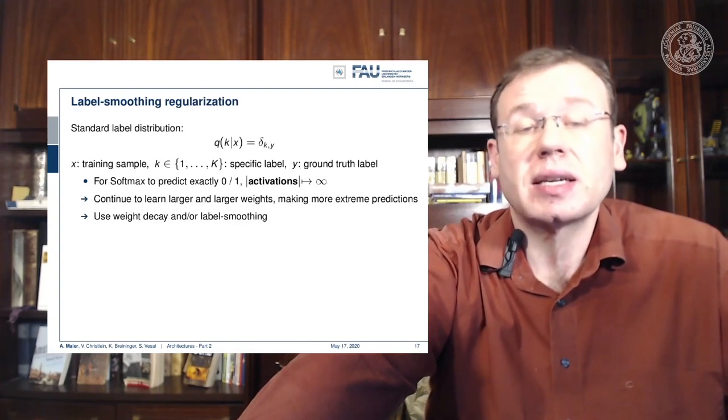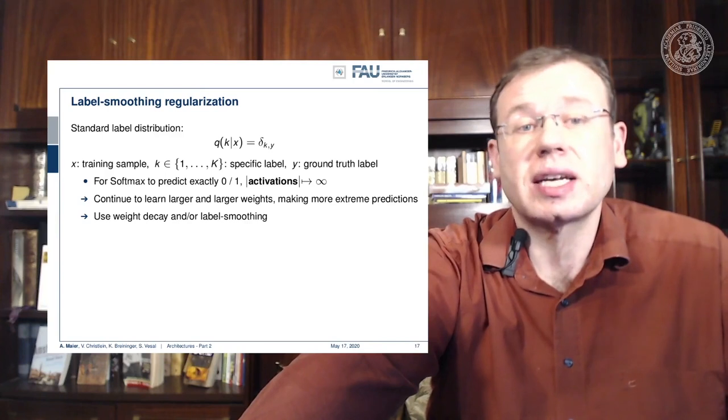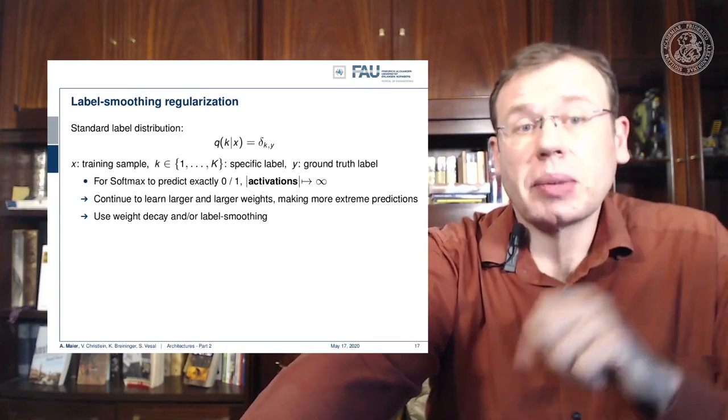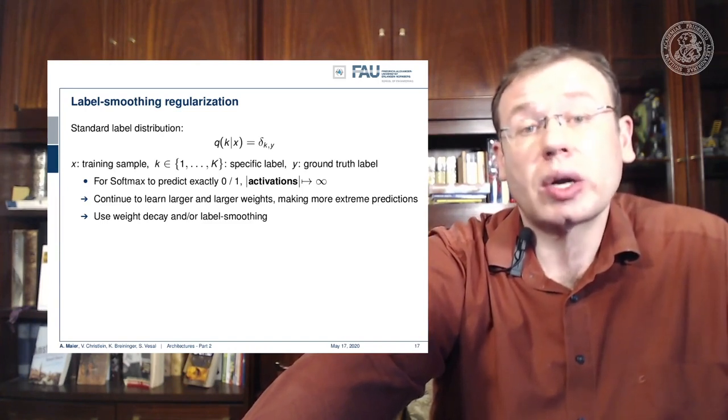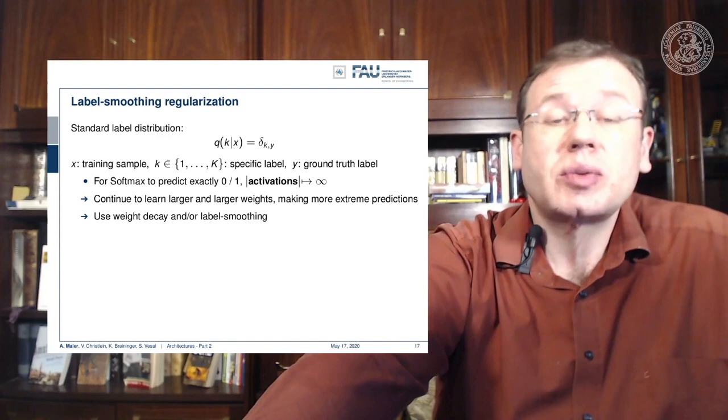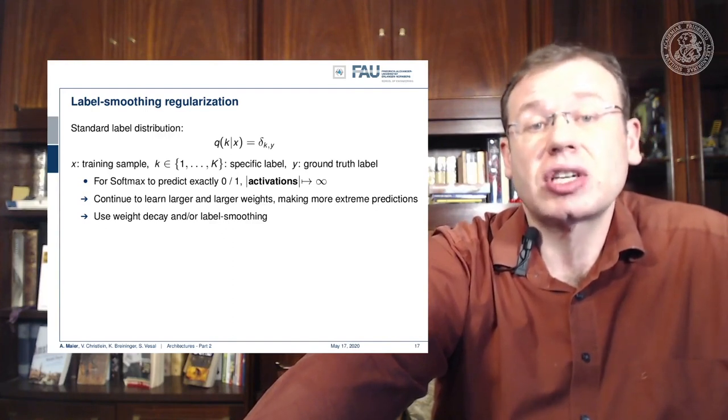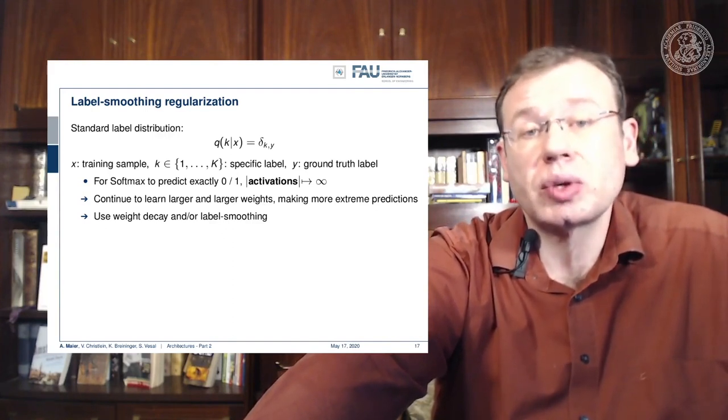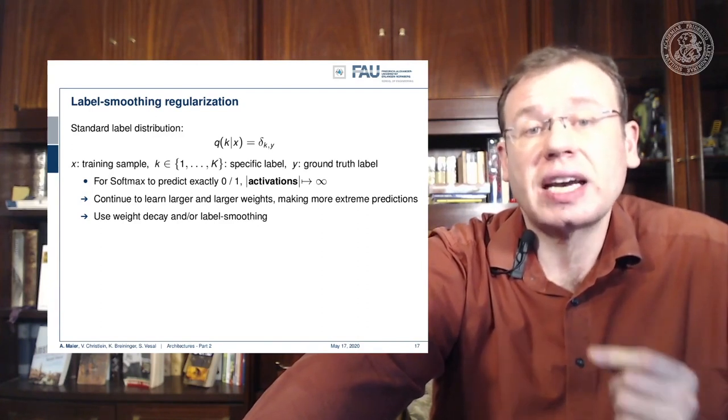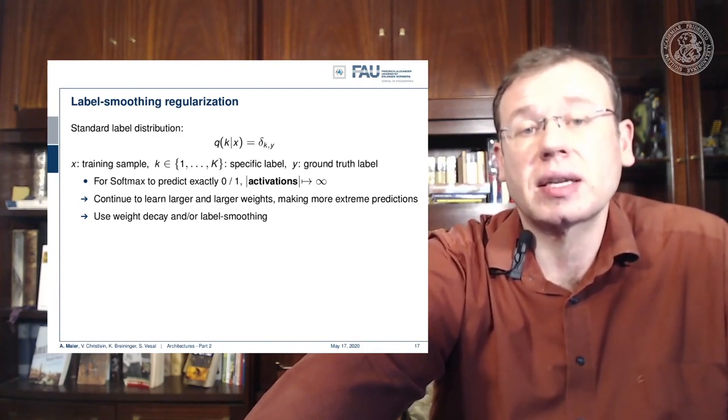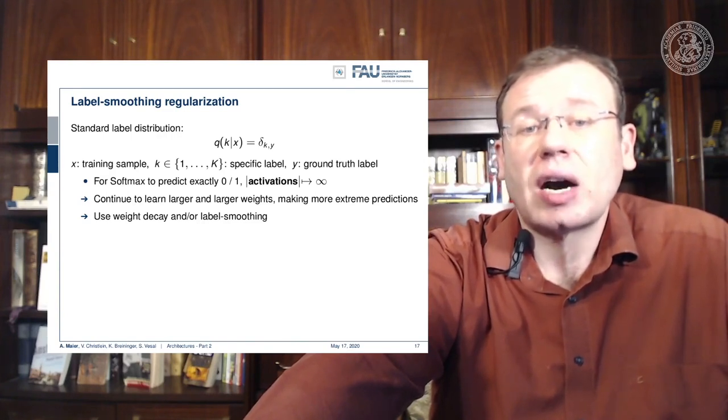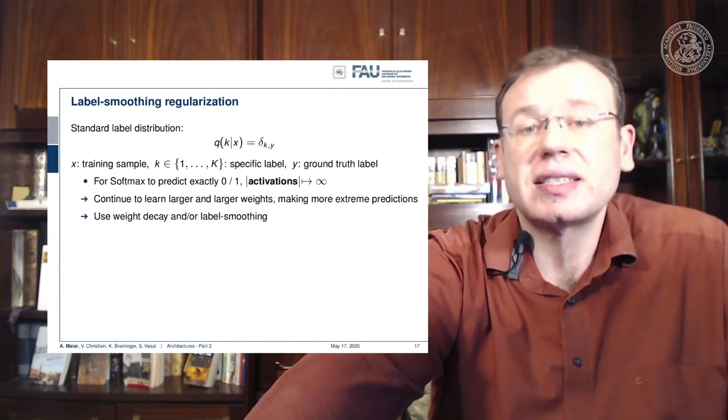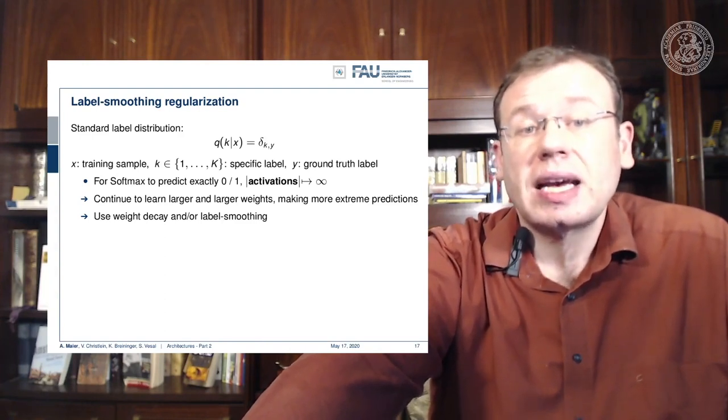Label smoothing regularization is a really cool trick, so let's spend a couple more minutes looking into that idea. If you think about how our label vectors typically look like, we have one-hot encoded vectors, which means that our label is essentially a Dirac distribution. This essentially says, okay, this one element is correct and all others are wrong. We typically use a softmax, so this means that our activations have a tendency to go towards infinity.